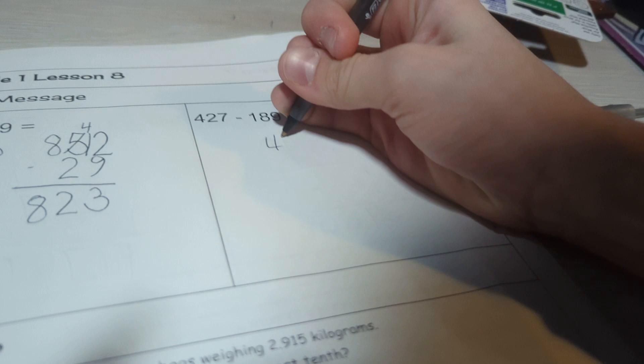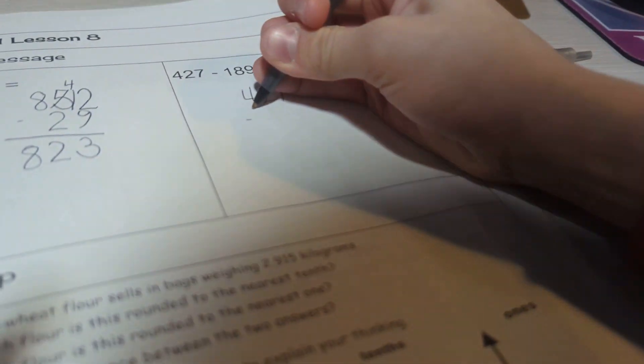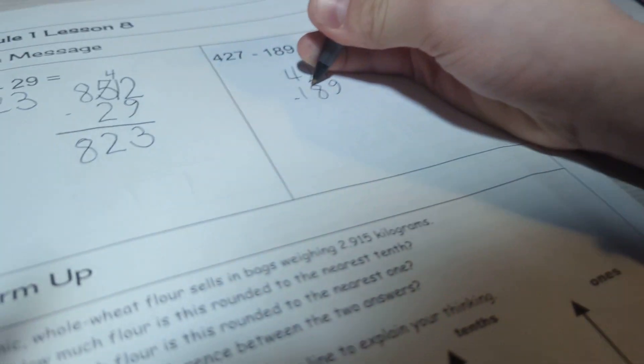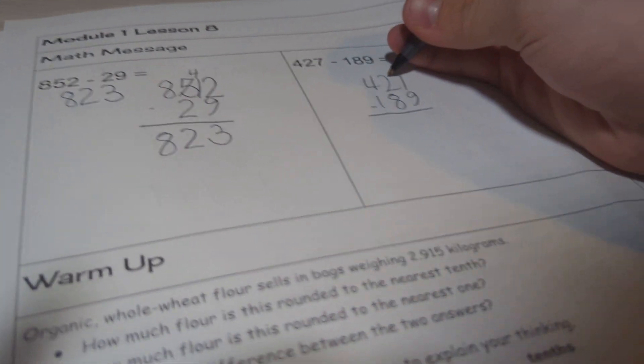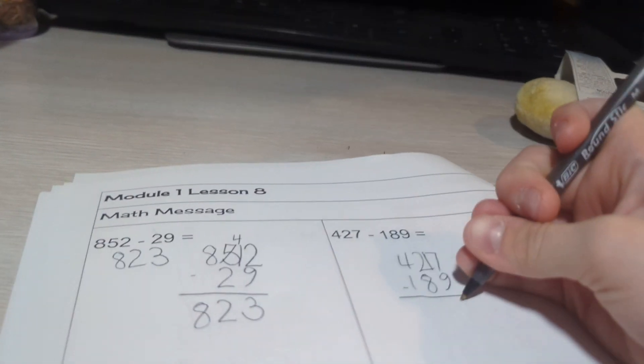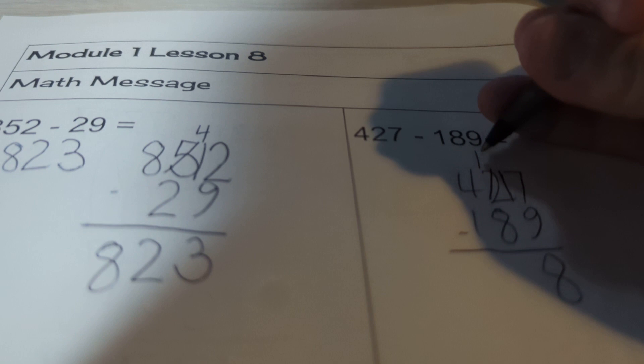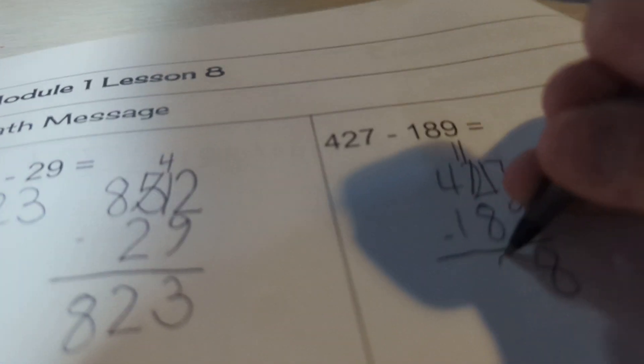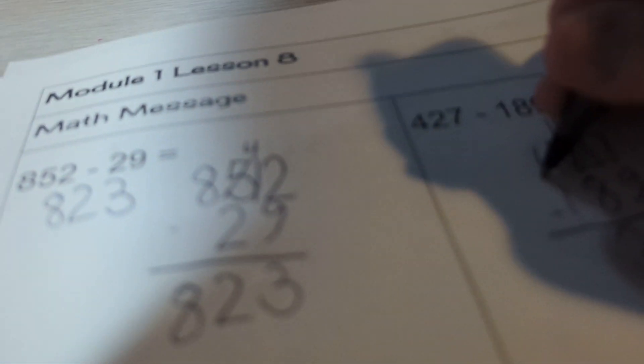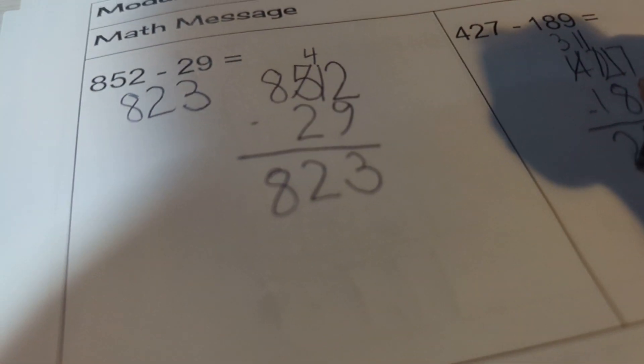Now we'll use 427 minus 189. Now I can know that 17 minus 9 is 8. Cross out the 2, make it an 11. 11 minus 8 is only 3. Cross out the 4, make it a 3. 3 minus 1 is 2. So 238 is your answer.